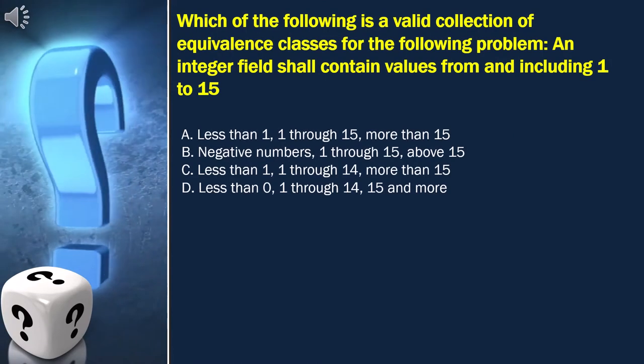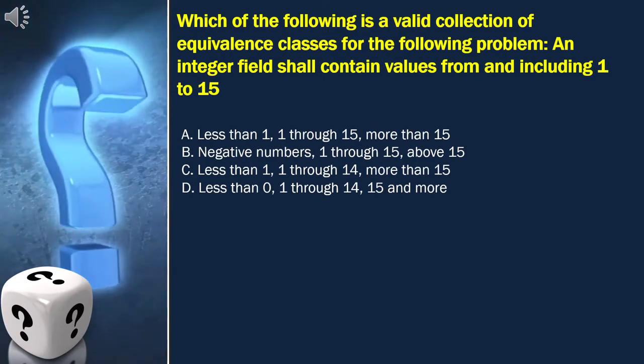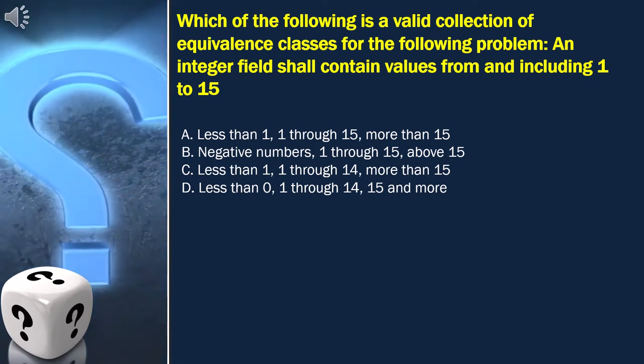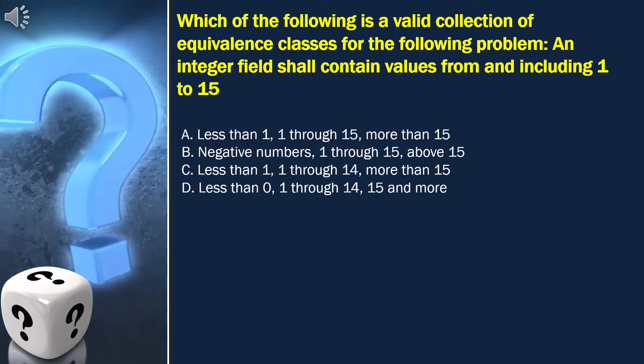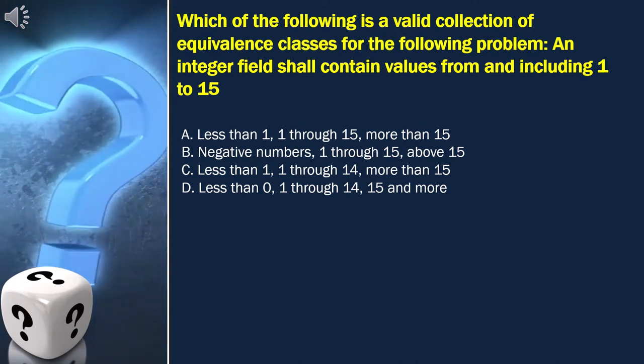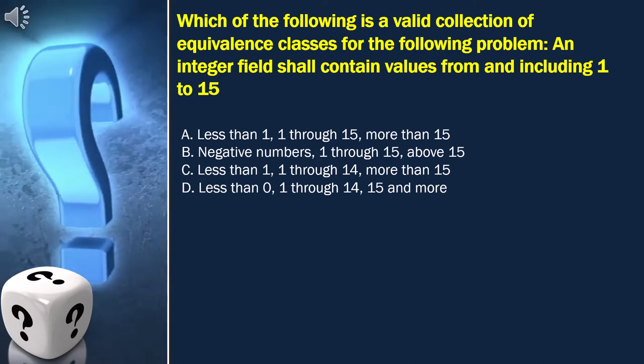Here, the question is, which of the following is a valid collection of equivalence classes for the following problem? An integer field shall contain values from and including 1 to 15.